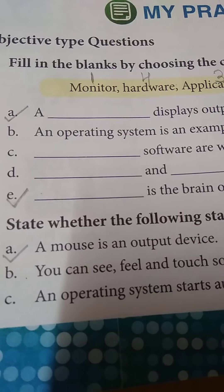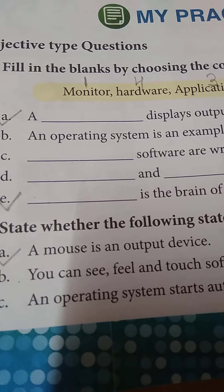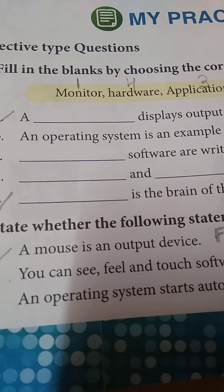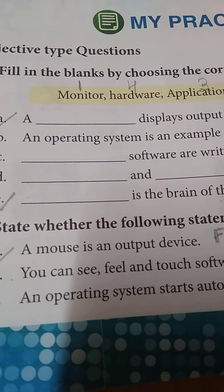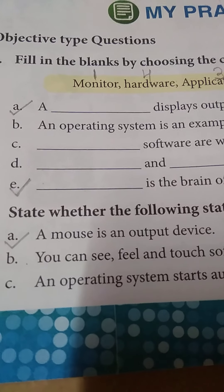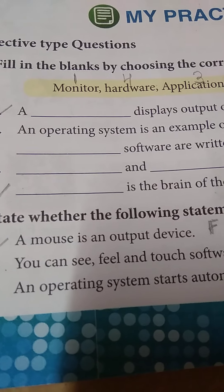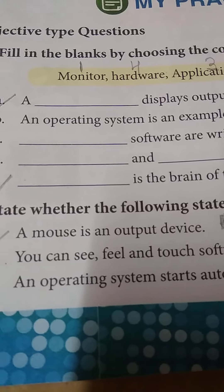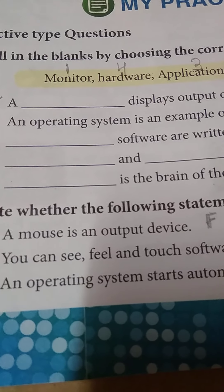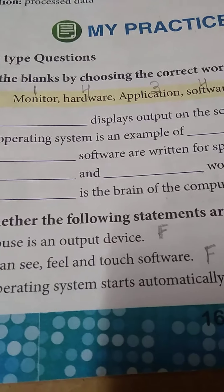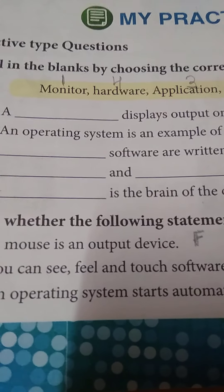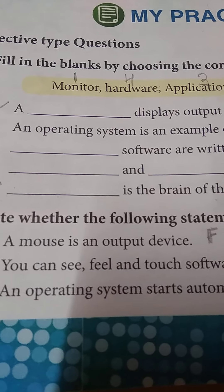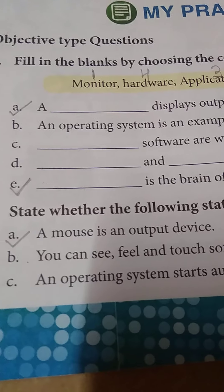Number 2: State whether the following statements are true or false. Write T for true and F for false. A: A mouse is an output device — it is false, write F. B: You can see, feel and touch software — it is also false, because we can only touch and see hardware, write F.